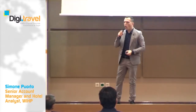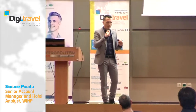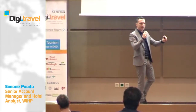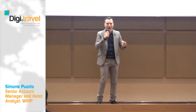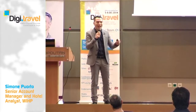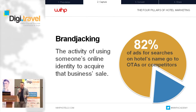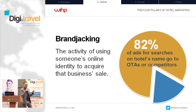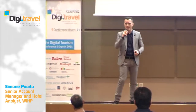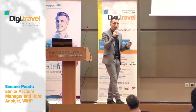Forget about doing AdWords for secondary keywords like 'best hotel in Greece' — 10,000 visits, one reservation — or 'luxury hotel in Greece' — 5,000 euros, no reservation. Just focus on the brand of your hotel and all keywords related to the brand: the hotel name plus 'Greece,' or the hotel name plus 'Athens,' or even typos. Buy all these keywords. You need to protect your brand. 82% of ads for searches on the hotel name are from OTAs or competitors. Travel is the third market globally for Google advertising.